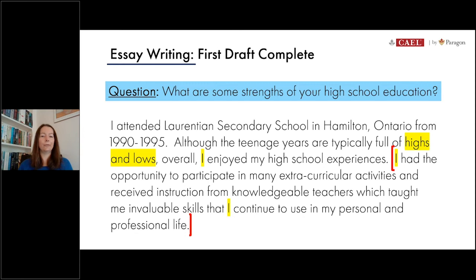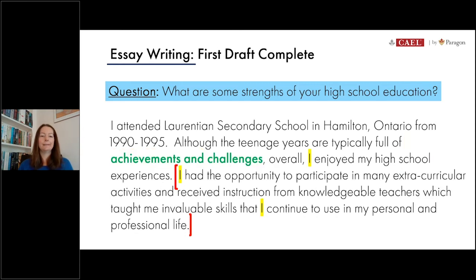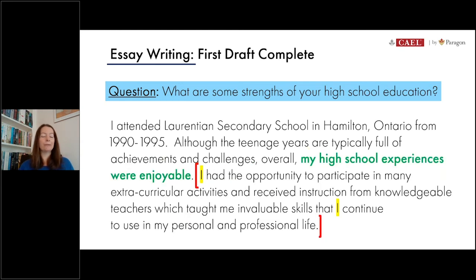Starting with that vocabulary choice: 'highs and lows' is too casual. Instead, 'although the teenage years are typically full of achievements and challenges' sounds much more academic — I'll keep that. Continuing, I've got that pronoun 'I,' which is an easy fix by reversing the structure. I'll replace it with 'my high school experiences were enjoyable' — the same idea but rewritten to avoid repetition. I'm happier with that, and the background is set. Now we'll tackle the harder part: the thesis statement within the red brackets.